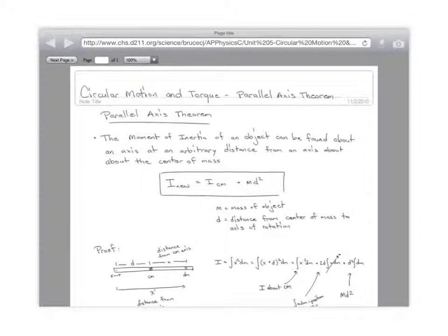So this is the parallel axis theorem. What's the basic idea? Yesterday we talked about how to get the moment of inertia of just a point mass around an axis. It's just m r squared, right?